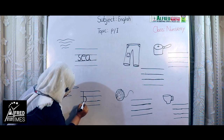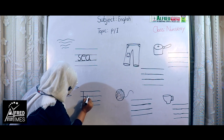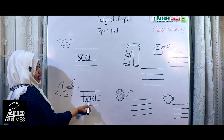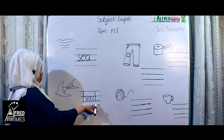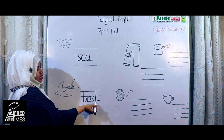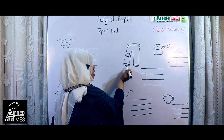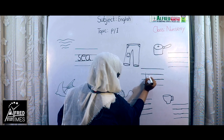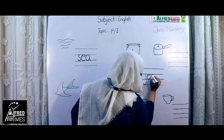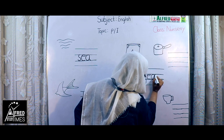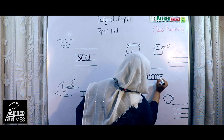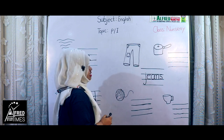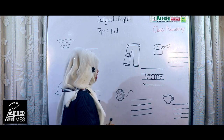Bird. Bird is spelling B-I-R-D. Bird. B-I-R-D. Bird. Everyone say B-I-R-D, bird. Next, this picture's name is jeans. Jeans spelling: J-E-E-N-S. Everyone again say jeans spelling J-E-E-N-S.